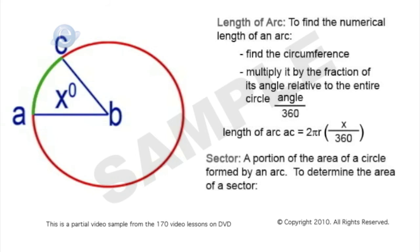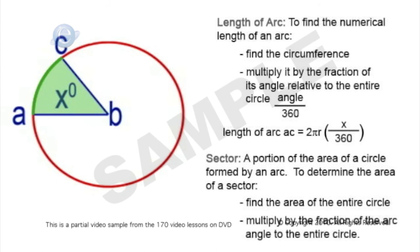Finally, we have a sector — a portion of the area of a circle formed by an arc. Rather than just the distance around the circle, we're talking about the entire area of that piece of pie. To find the area of a sector, find the area of the entire circle, then multiply by the fraction of the arc angle to the entire circle. The area of sector ABC equals πr² multiplied by angle x divided by 360 degrees.